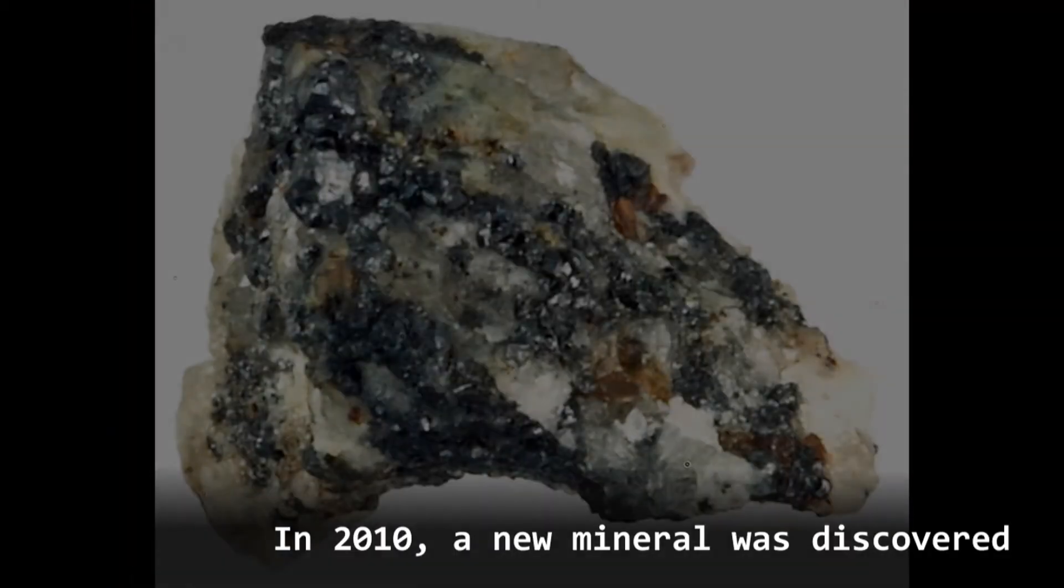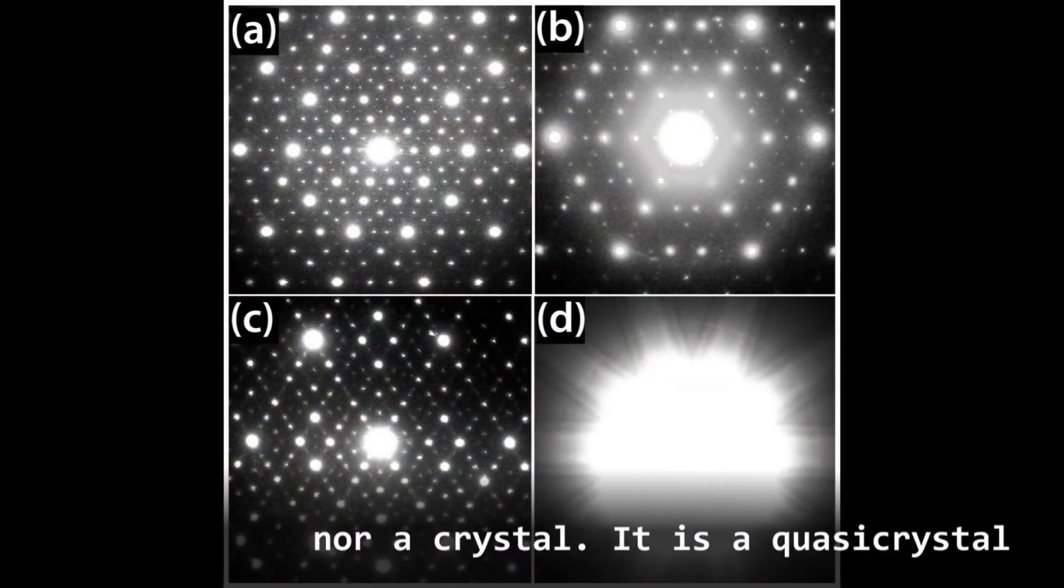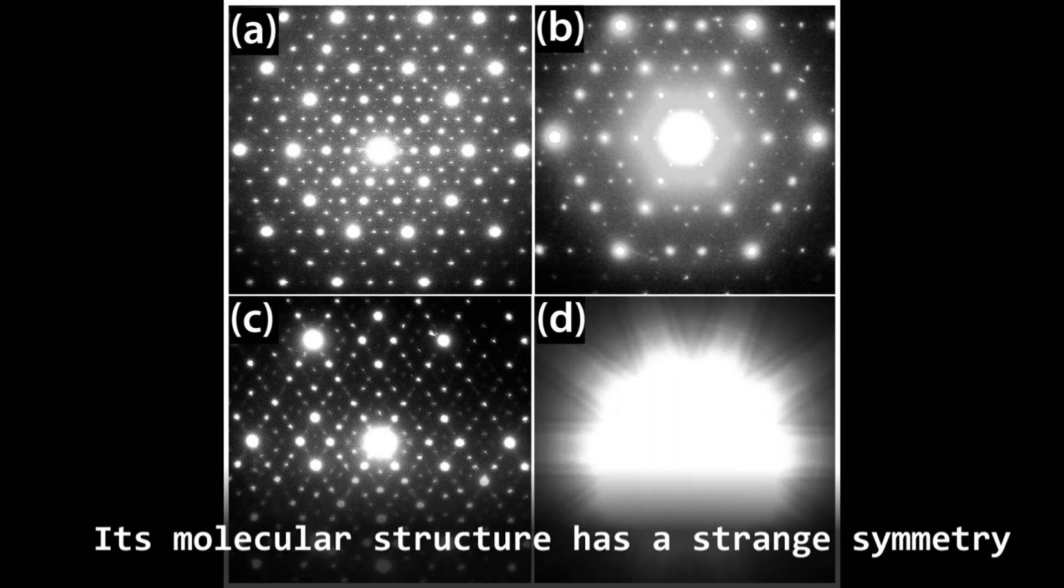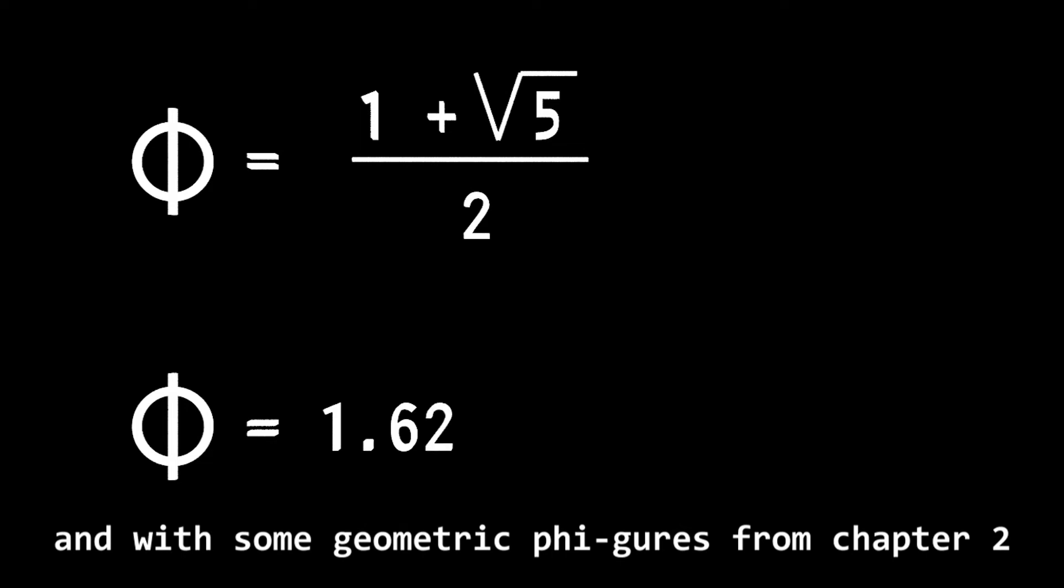In 2010 a new mineral was discovered, the icosahedrite. The icosahedrite is neither amorphous nor a crystal. It is a quasicrystal. Its molecular structure has a strange symmetry that is related to number 5 and with some geometric figures from chapter 2.